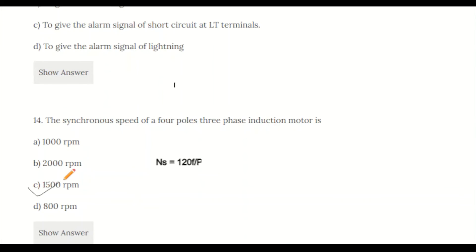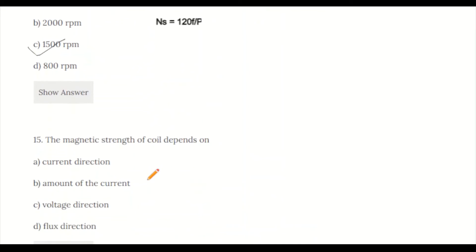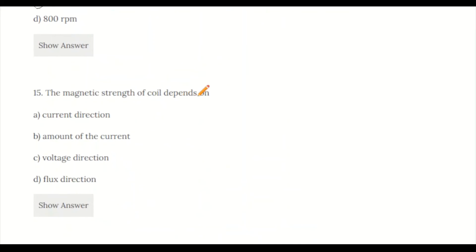Question 15: The magnetic strength of coil depends on: a) kind reaction, b) the amount of current, c) voltage reaction, d) flux direction. The correct answer is B, the amount of current. When current increases, electron flow increases, and the magnetic field around it increases.